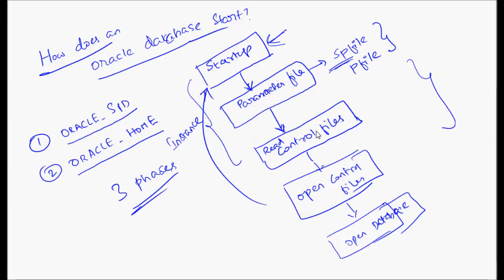Now it reads the control files. Once the control files are read, the startup process needs to read the database files and open them. The control files tell the startup process the locations and other properties of the database files. Using that information, it's able to go and open the database. So the parameter file gives information about the control files; it reads and opens the control file, and from there it's able to open the database.